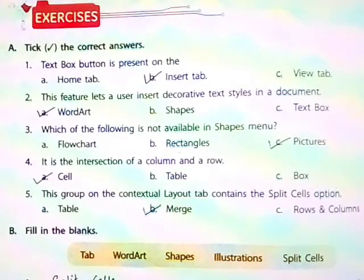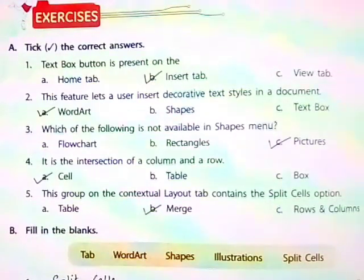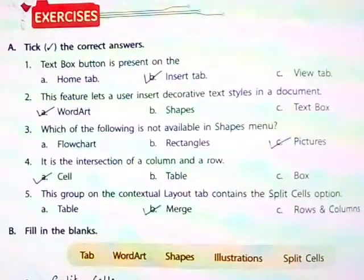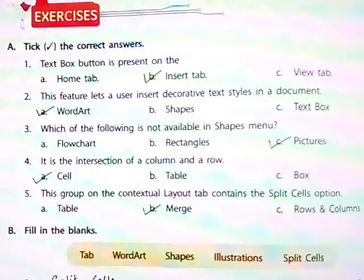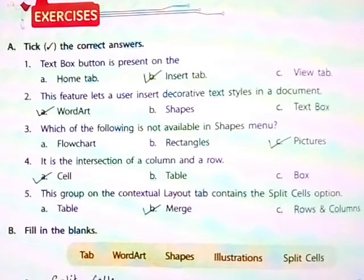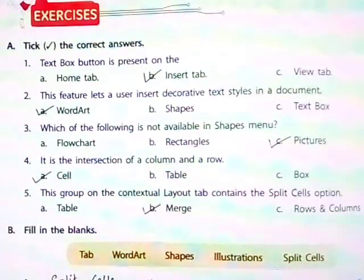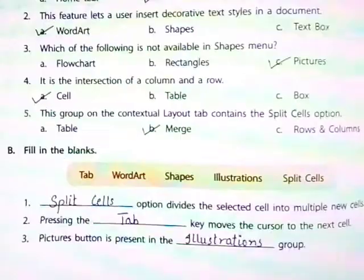Fourth, it is the intersection of a column and a row — Cell. Fifth, this group on the Contextual Layout tab contains the Split Cells option — Merge.